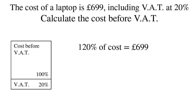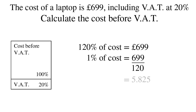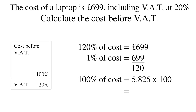The easy way to do this is to work out 1%. Take the £699 and divide by 120. This gives us 5.825. We then multiply this by 100 to get our answer: £582.50.